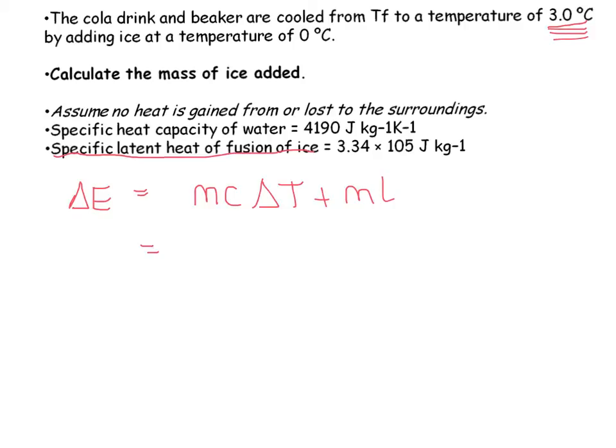So in this case, we don't know the mass, but I'm going to factorize that out. So you've got your c of 4190, you've got your temperature change of 3 minus 0, so it's just going to be 3.